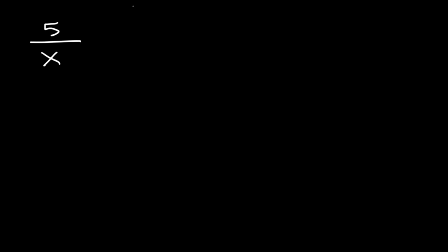In this lesson we're going to add and subtract rational expressions with unlike denominators. Let's start with this example: 5 over x plus 3 divided by x squared.